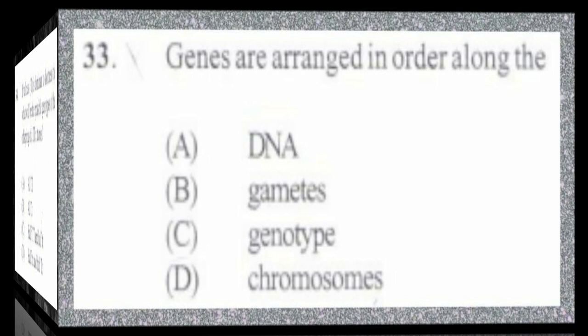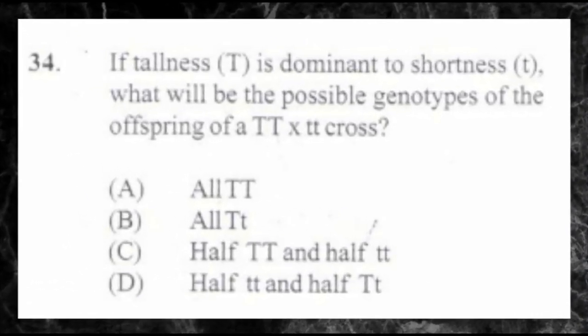Question number 34. If tallness is dominant to shortness, what will be the possible genotype of the offspring of a dominant homozygous and recessive homozygous cross? A. All dominant homozygous, B. All dominant heterozygous, C. Half dominant and half recessive, D. Half recessive and half heterozygous. The answer is B, all heterozygous.